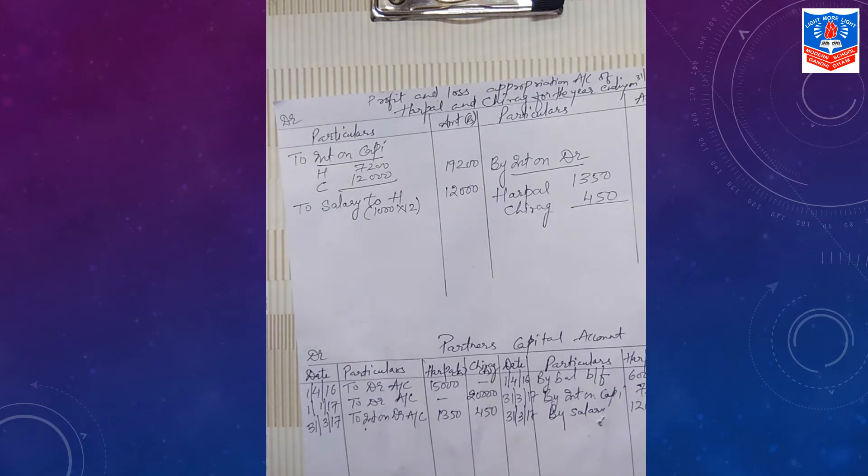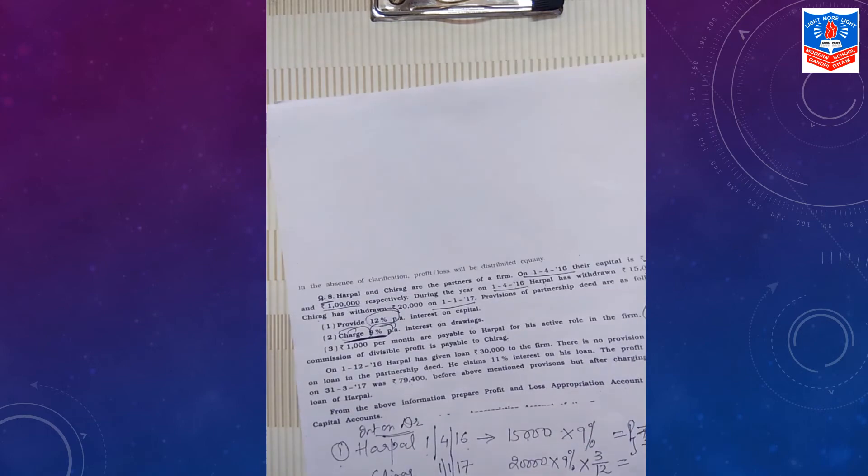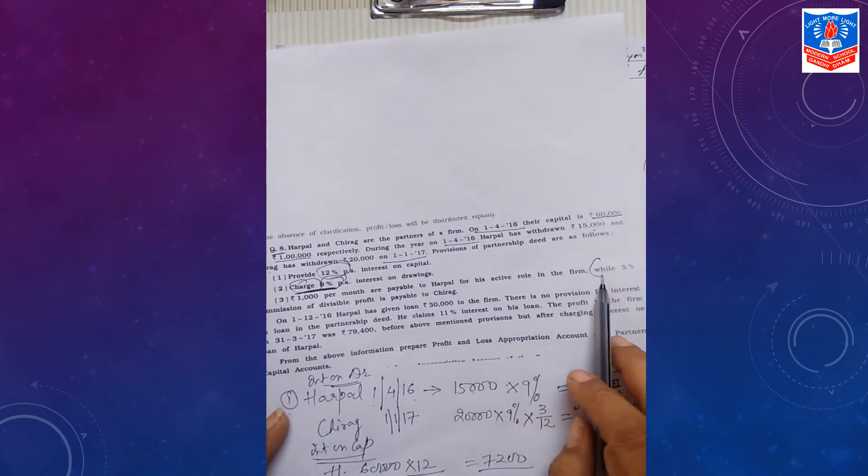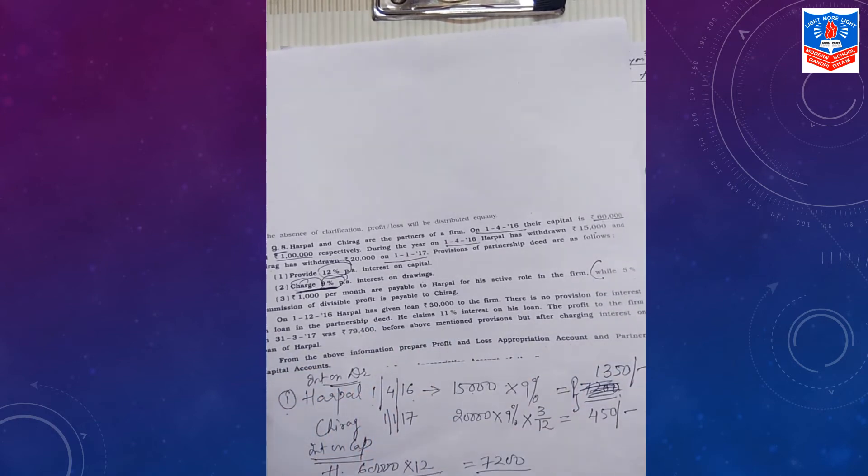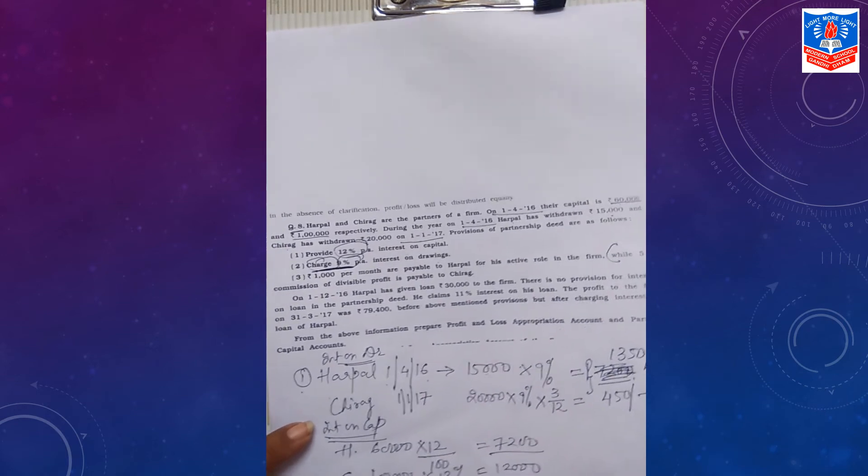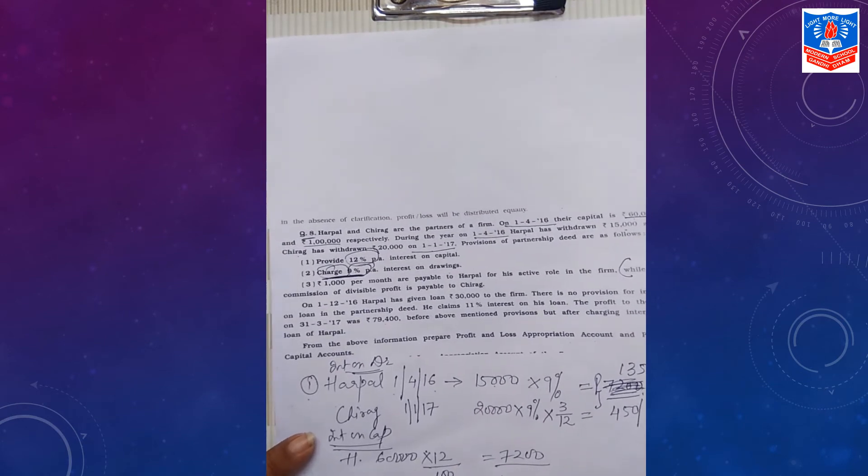Let us go to the third adjustment, next part of third adjustment. Very important, very nice one. 5% commission of divisible profit is to be paid to Chirag. So when divisible profit comes, we have to remember to give Chirag 5% commission. Divisible profit, wait, that will be the last thing which we will be doing.